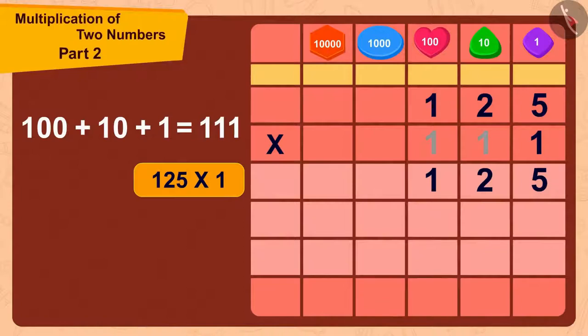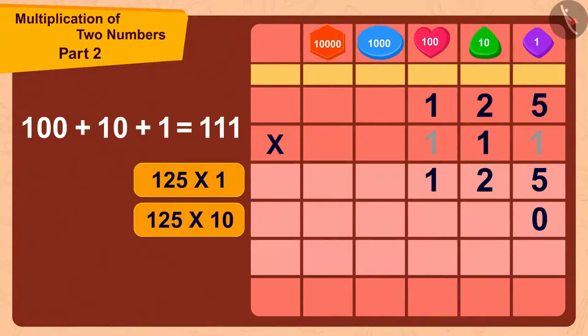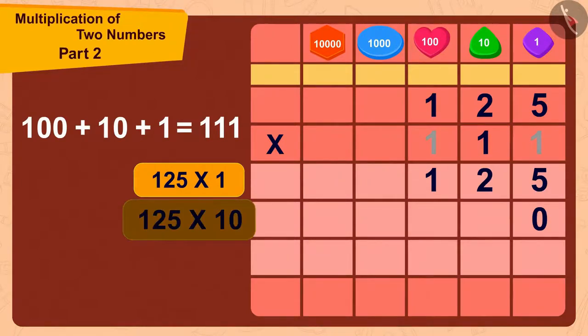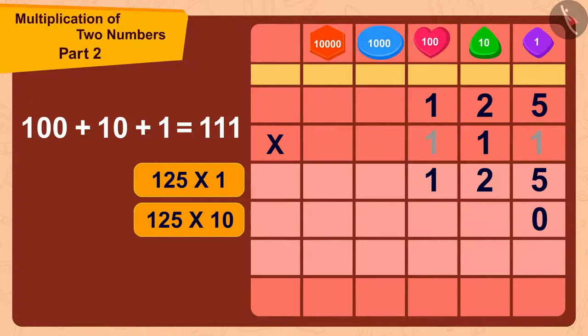Now, we will multiply 125 with 10. We will do it easily in this way. First, we will write 0 here. Then, we just have to multiply 125 with 1. In this way, 125 multiplied by 10 would be 1250.